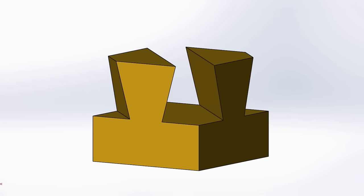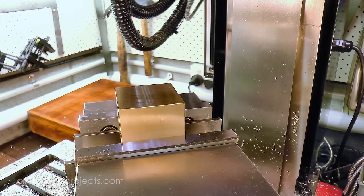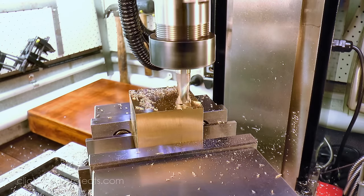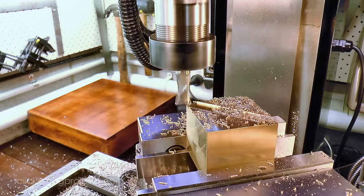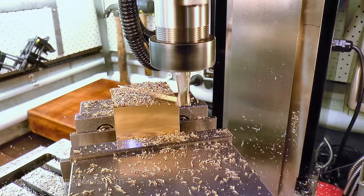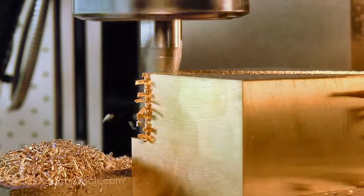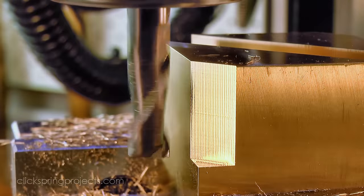The matching brass section was machined in much the same way. Although whilst the dovetail cutter had no problem with the aluminum, it really did struggle with this brass. I had to reduce the feed rate significantly, or risk overheating the cutter, which meant this part of the job took much longer than I would have liked.